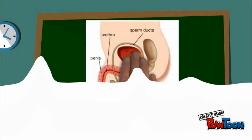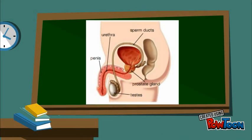And this is a drawing of the male reproductive system, with the sperm ducts, prostate gland, testes, urethra and penis.